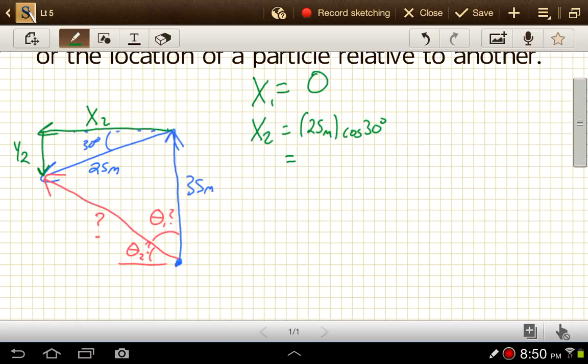So x2 then is going to be 25 meters times the cosine of 30 degrees, and that gives us 21.7 meters.